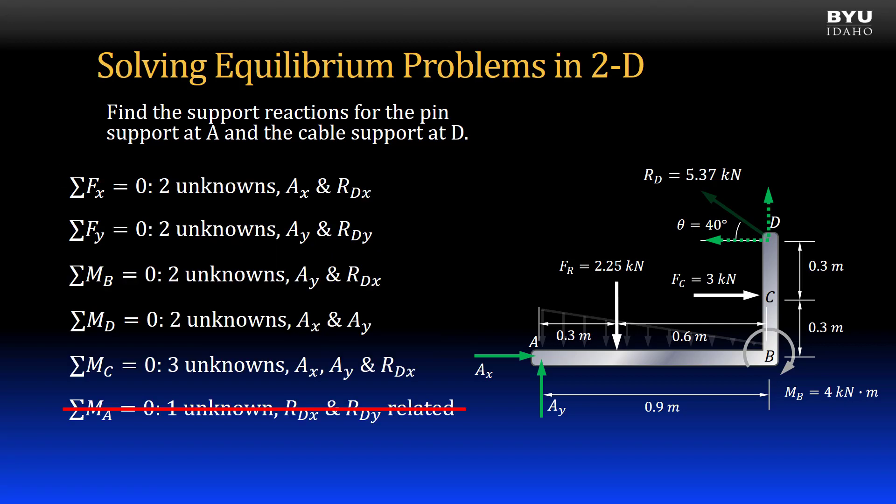Now that I have reaction RD, I go back to my equations of equilibrium and select the next best one. If I now sum forces in the x direction or in the y direction, there will be only a single unknown in the equations. So I will choose these.